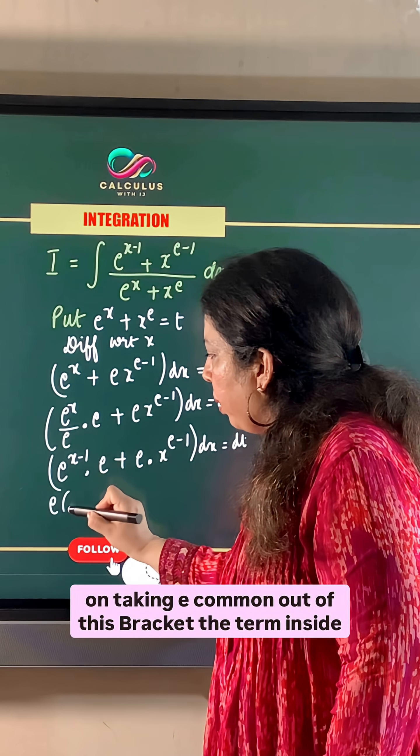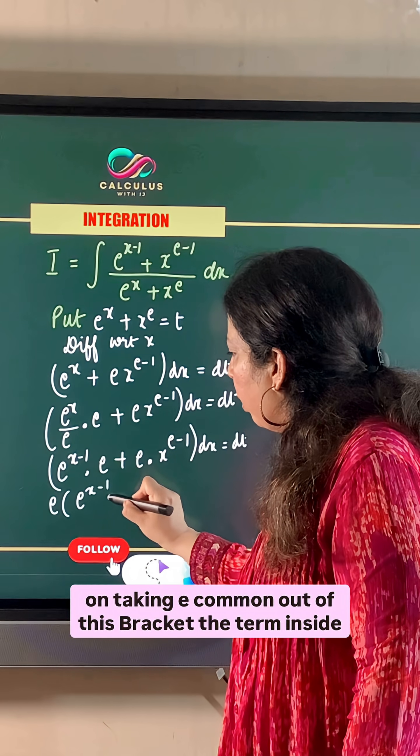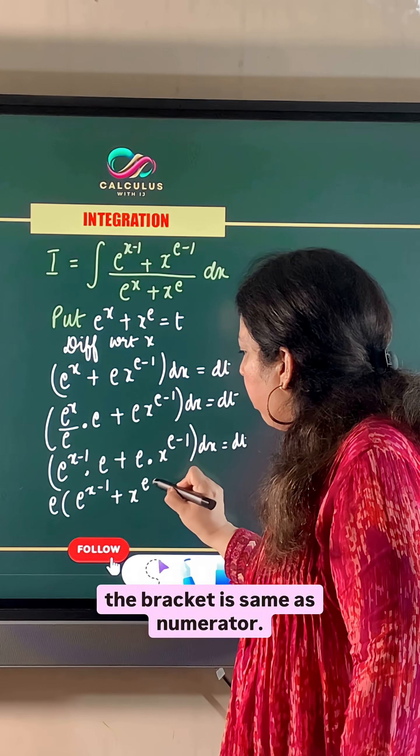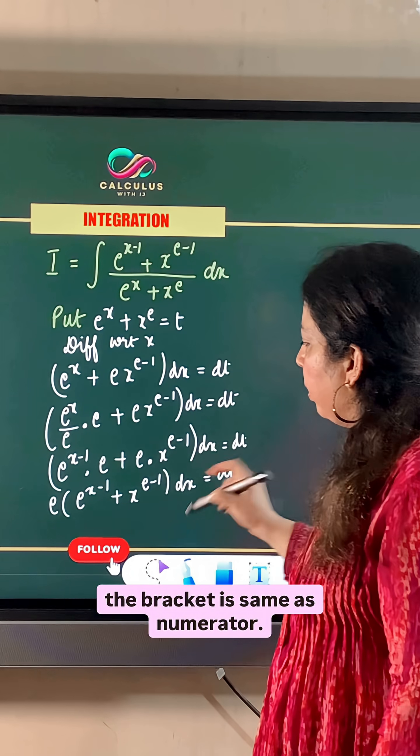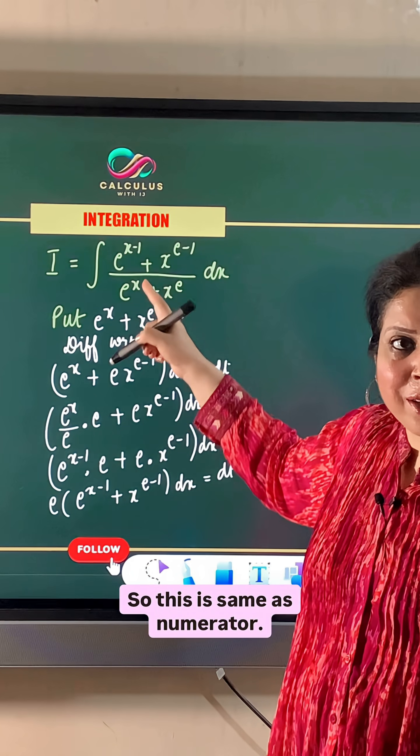On taking e common out of this bracket, the term inside the bracket is the same as the numerator. So this is the same as the numerator.